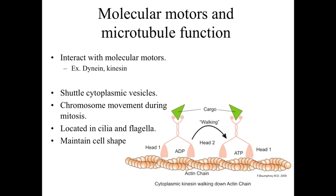Dynein and kinesin as molecular motors attach to things like cytoplasmic vesicles — vesicular movement is directed by being dragged along microtubules, not by random diffusion. Chromosome movement during mitosis also uses microtubules: little motors attach to the centromeres and pull chromosomes apart and separate them. Microtubules also form specialized structures in cellular projections like cilia and flagella, which are able to beat and move due to the interaction of microtubules and molecular motors.